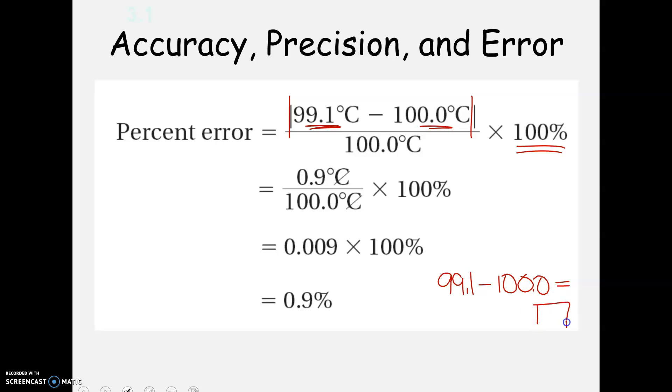You can do 99.1 minus 100, hit the equal sign. Then after you hit the equal sign, you don't have to enter that number again, just leave it. Take that number, divide it by the 100, and that's what they did here. And you can then go ahead and multiply by 100%. You don't need to do that in a separate step.